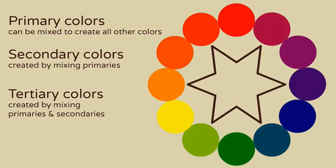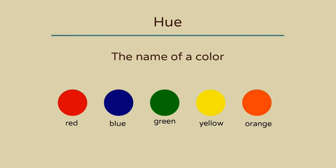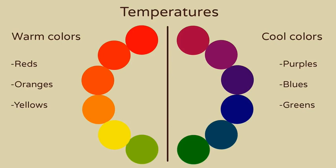Now let's go over some basic terms to help you better understand and talk about color theory. A hue is the name of a color, like red, blue, green, yellow, and orange.